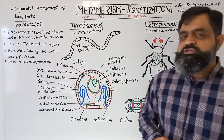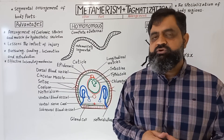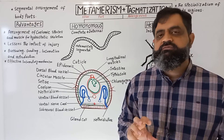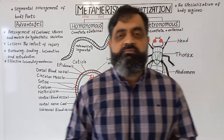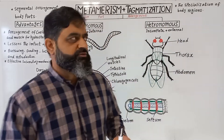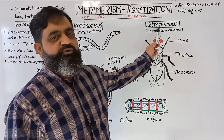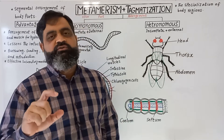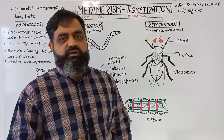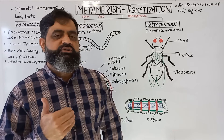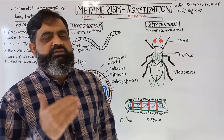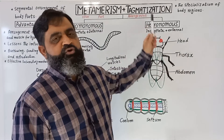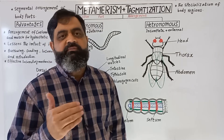Metamerism is also found in other invertebrates and vertebrates like arthropods and even human beings. However, this metamerism is not complete — it is known as incomplete metamerism, also called heteronomous metamerism, which can only be seen from the external body surface. The segmentation is not internal, and each body segment has a different role. This kind of metamerism has a different name: tagmatization, because the body has been divided into different tagmata.